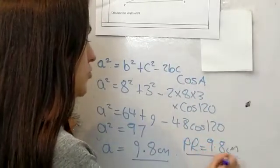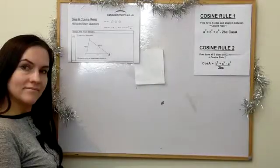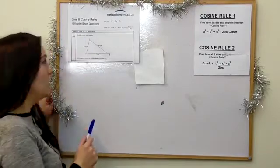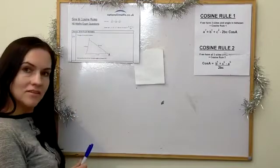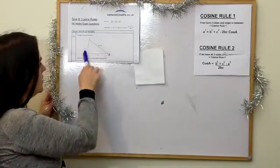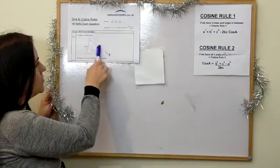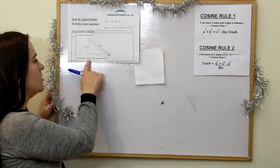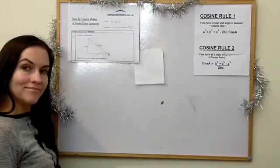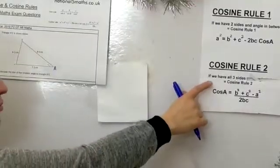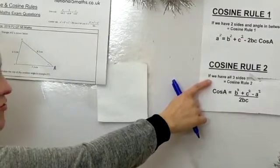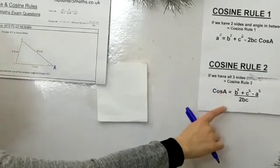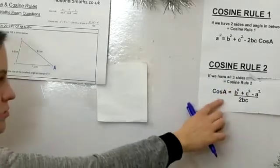Now for another example from the 2019 paper: triangle XYZ with sides 6.3 cm, 8.5 cm, and 7.2 cm. We're asked to calculate the size of the smallest angle. Since we have all three sides, we use cosine rule 2.